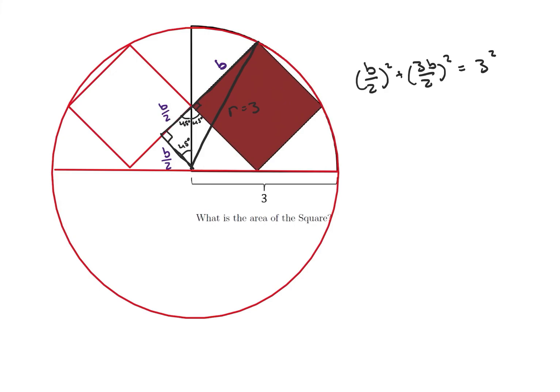Okay, so we're going to get B squared over 4 plus 9B squared over 4 is equal to 9. So 10B squared over 4 is equal to 9, which means that B squared is going to be equal to 36 divided by 10, which is just equal to 3.6.